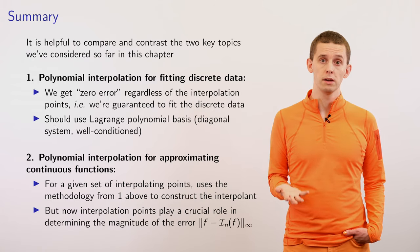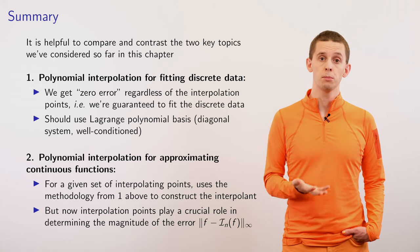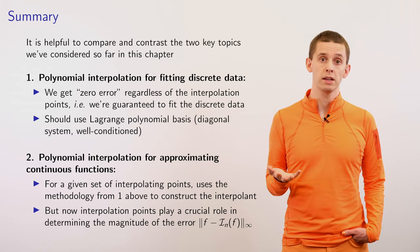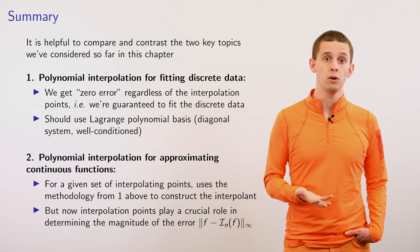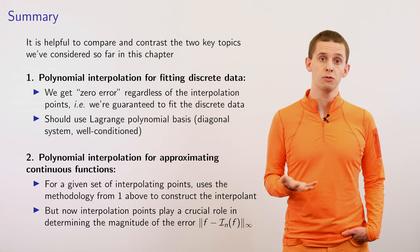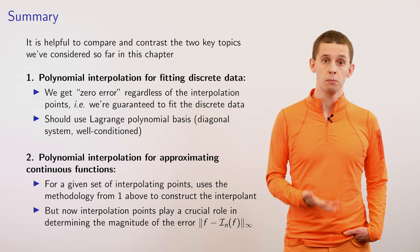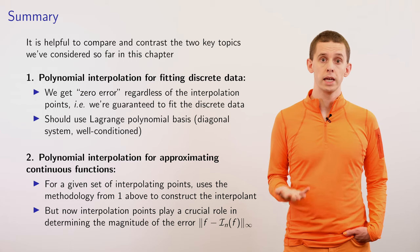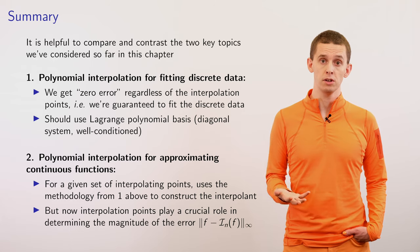To summarize: we first looked at the discrete data problem and fitting polynomials to discrete data, seeing that we could solve this exactly with zero error using Lagrange polynomials, which provide an effective and well-conditioned interpolation method. We then looked at approximating continuous functions with polynomials using the same methods by choosing a set of interpolation points. However, the choice of interpolation points has a large effect on accuracy.